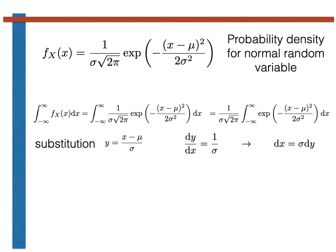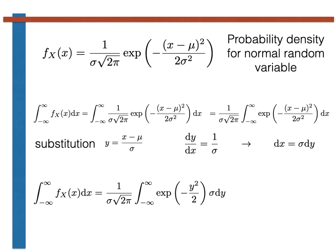After completing the substitution, we find that our integral reduces to the expression shown here. The factors of sigma in the numerator and denominator cancel and the integral reduces further. We now recall a very useful fact: the integral of e to the minus y squared over all space is equal to the square root of 2 pi. This is a really important integral, especially for statistics, and well worth memorising. Once we recall that the integral equals the square root of 2 pi, we have this factor in both numerator and denominator — these cancel, and we are left with 1, as required.